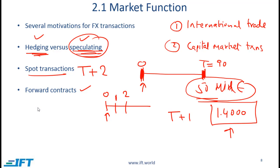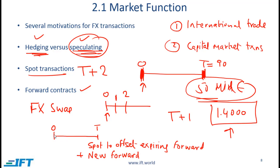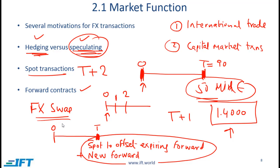A related term mentioned in the reading but not in the learning objectives is an FX swap. Briefly: if at time zero we enter a forward contract and as it approaches expiry we get into a spot transaction to offset the expiring forward plus enter a new forward contract, this combination is called an FX swap. I won't go into more detail since it's not in the learning objectives and there are no practice problems covering FX swaps.